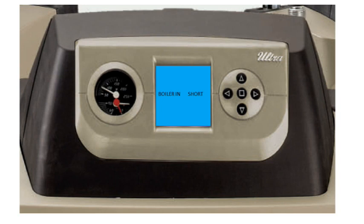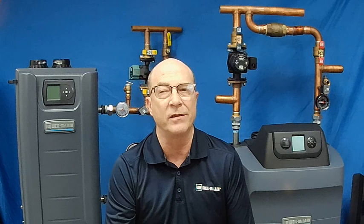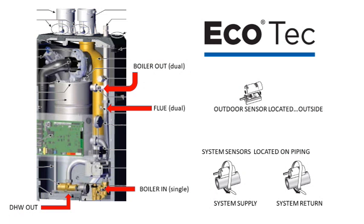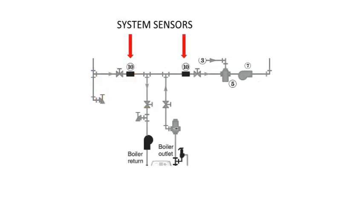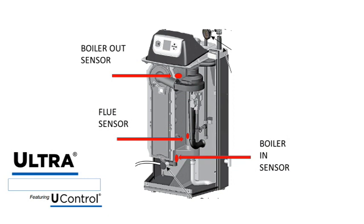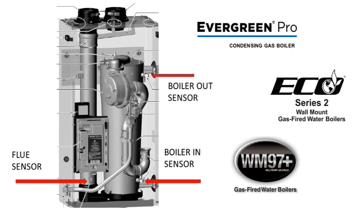There really isn't much to these sensor errors when it comes to determining which sensor is causing the issue. The tricky part can be finding exactly where that sensor is located. Here are a few diagrams of our most common sensor locations. On our Ecotech boiler, we can see the boiler out sensor, the flue sensor, boiler in sensor, and DHW sensor when used. Along with those, we have the outdoor sensor and the system sensors. The system sensors are located on the pipes, usually within three feet of the bypass connection. The outdoor sensor will be outside. Sensor locations for our Ultra Boiler are shown here, and Evergreen, Eco, and WM97 are shown here.